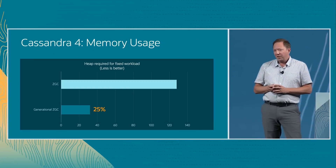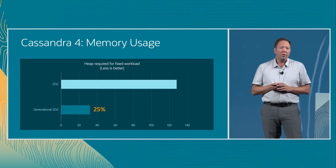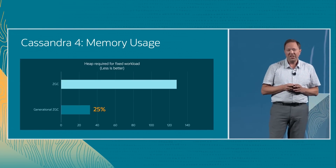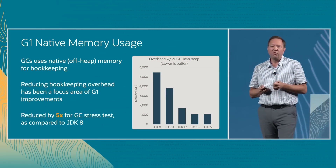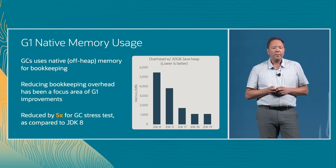In a Cassandra 4 benchmark straight from the lab, generational ZGC required just 25% of the memory to fulfill the same service requirements. That's huge — or rather, tiny. As an aside, Parallel GC and G1 of course also see continuous improvements, and particularly the latter has seen a steep drop in native memory overhead between JDK 8 and JDK 19.